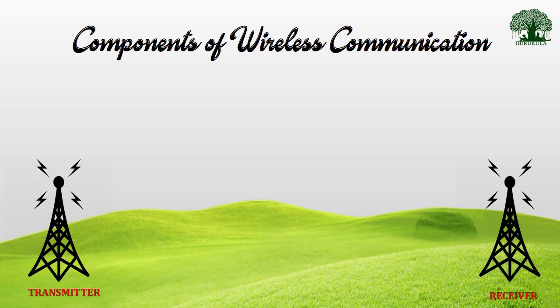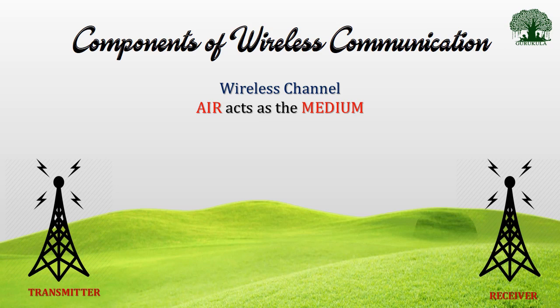Obviously, I also need someone to receive messages at the other end — that is the receiver. To transmit signals from transmitter to receiver, I need a medium. Since it is wireless, we cannot use a hard wire connecting transmitter and receiver. Therefore, air is going to act as the medium — we send our information or signals through air, which is why we technically call it the wireless channel.